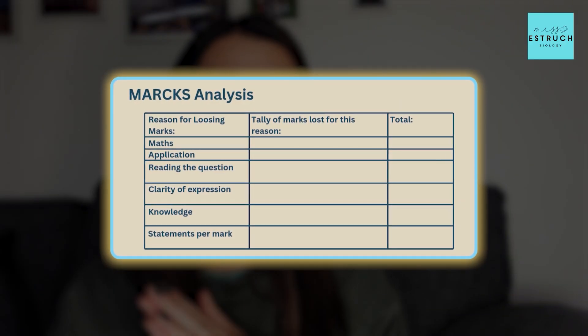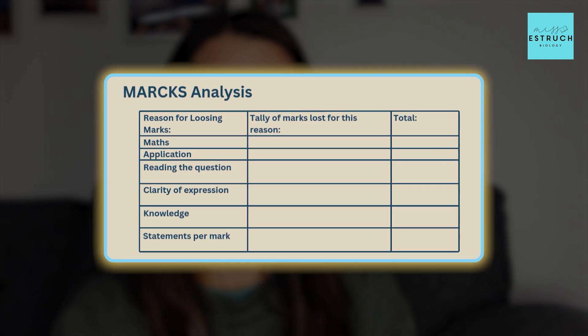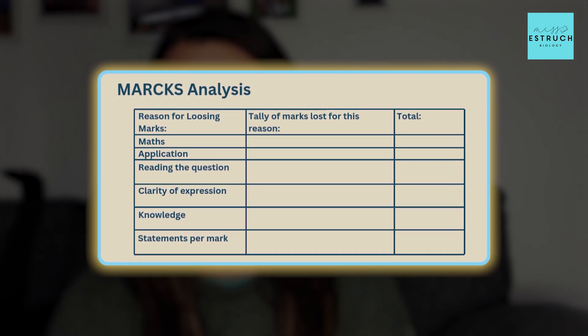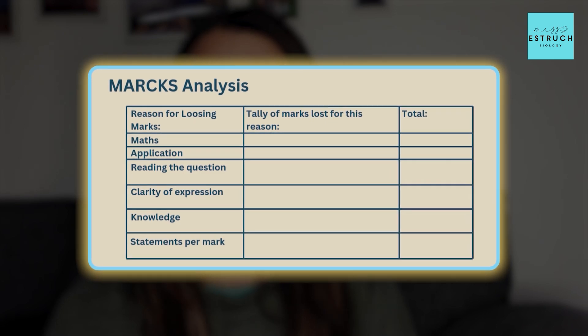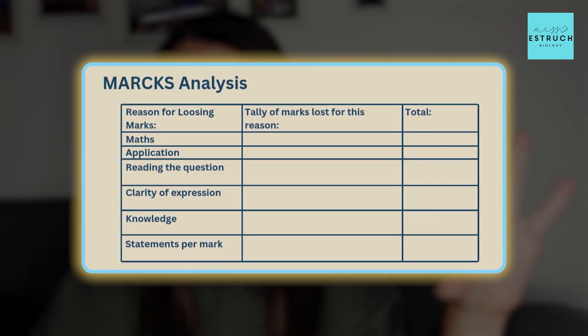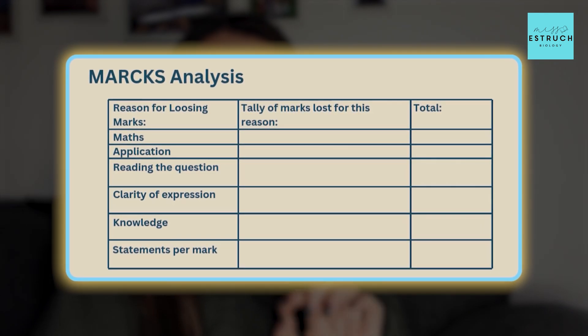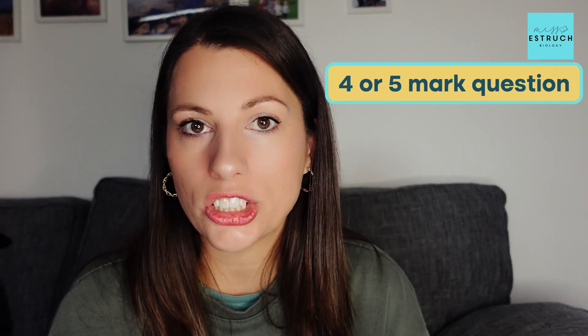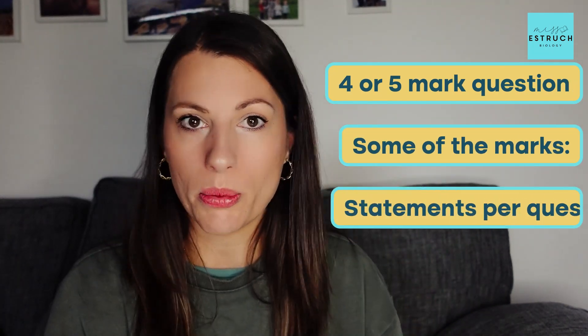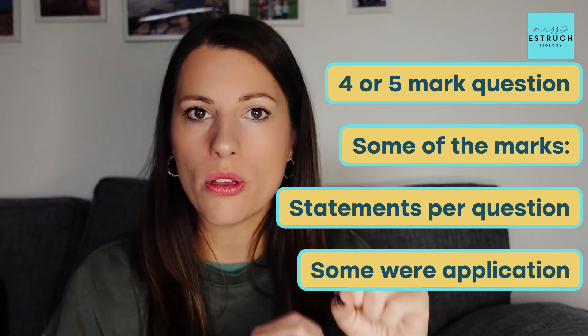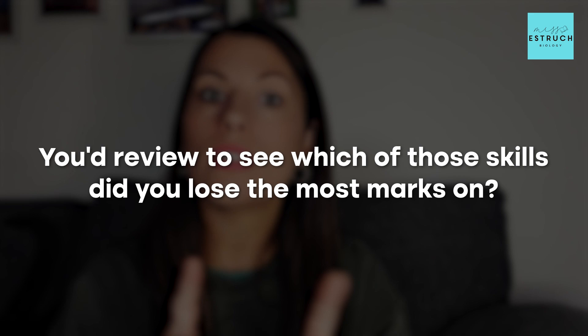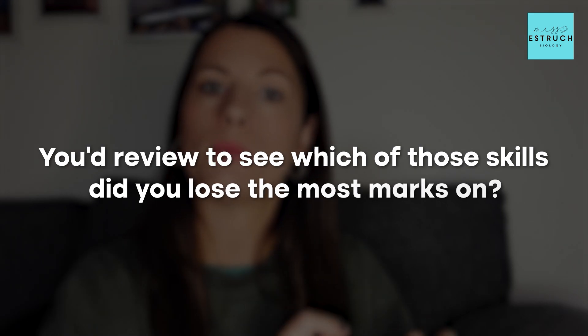The idea behind MARKS Analysis is that you review all of your answers to the test with the questions and the mark scheme. For every question where you lost a mark or more, you tally up in a table which category from the MARKS acronym is the reason you lost that mark. For a four or five mark question it might be a mixture — some marks lost to statements per question, some to application. At the end you review to see which skill you lost the most marks on.